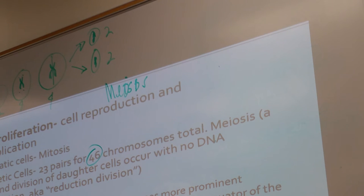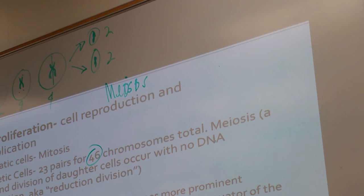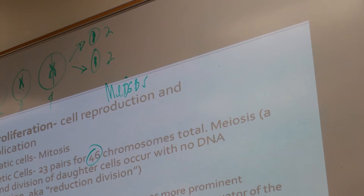So at meiosis, the cell splits one more time. The end result is four daughter cells instead of two, and each of those four daughter cells has only one set of chromosomes.